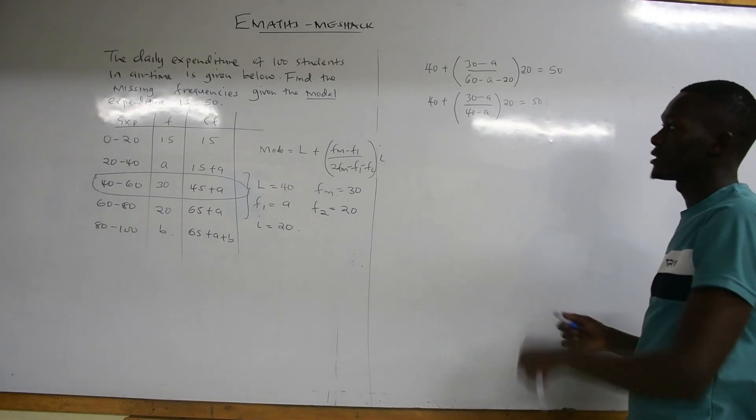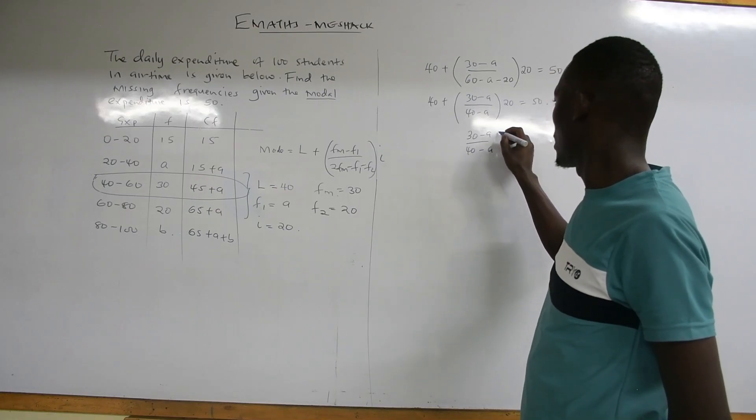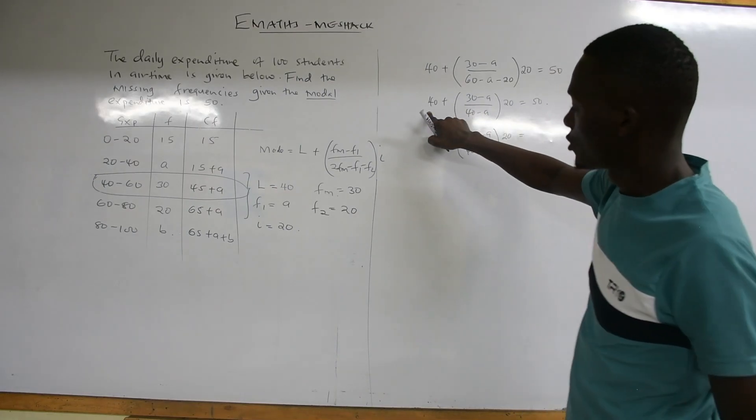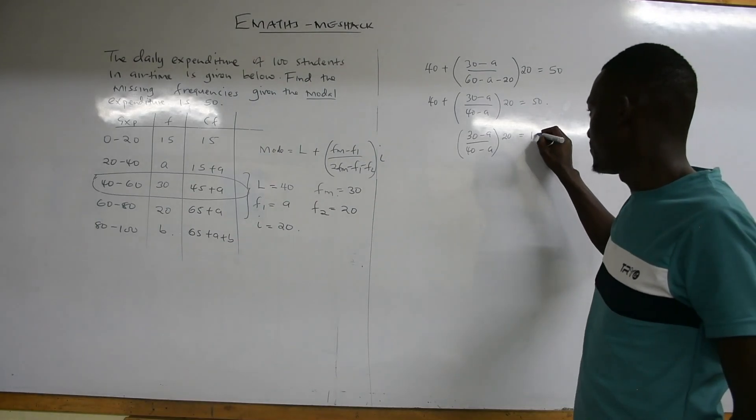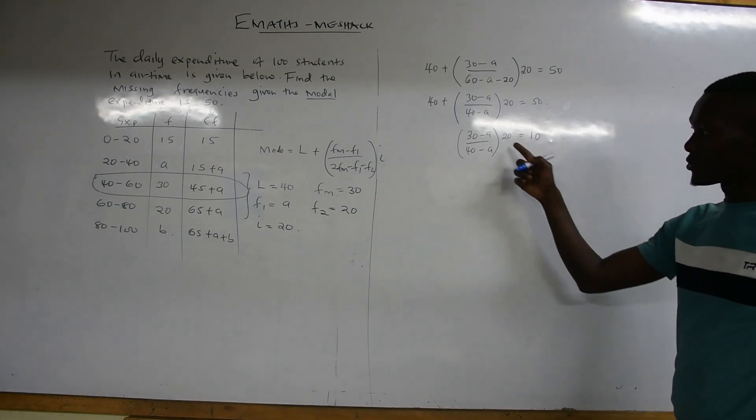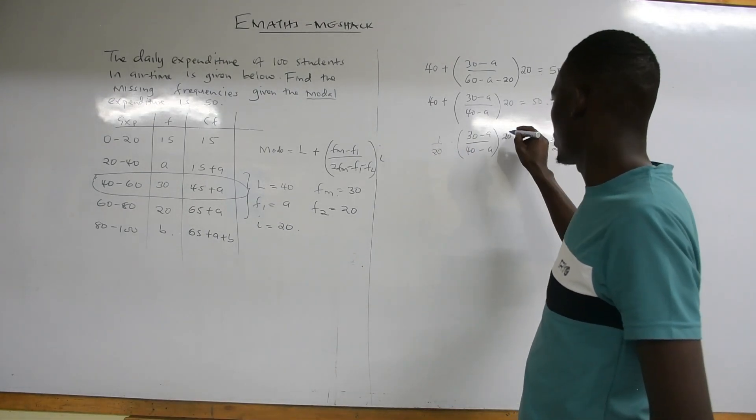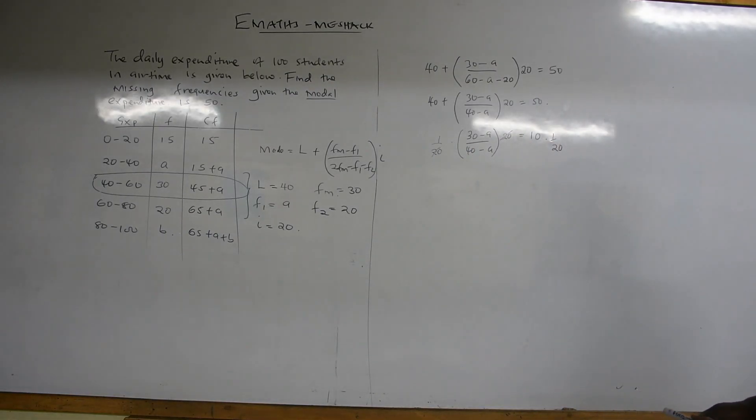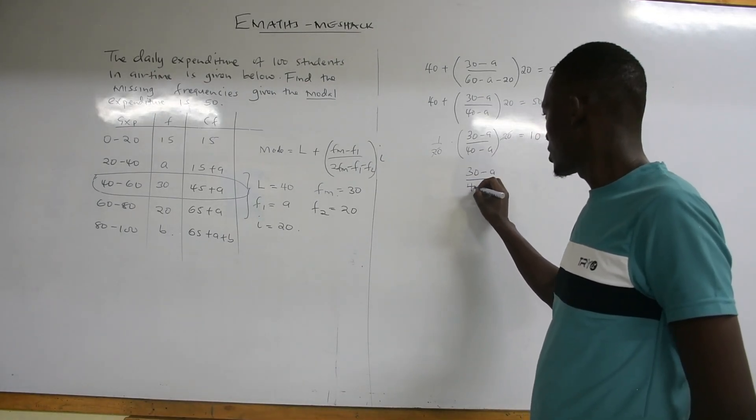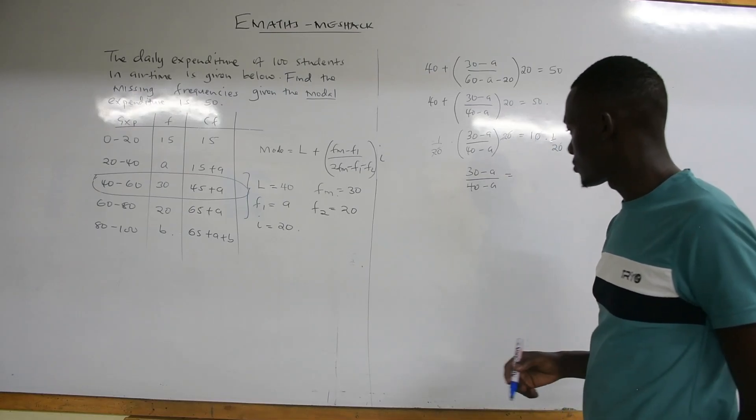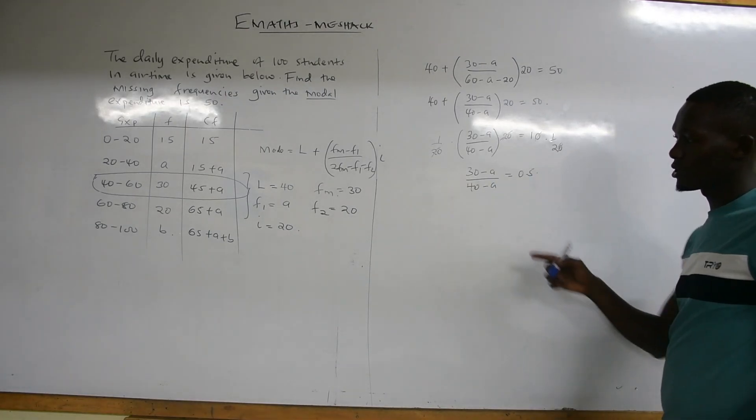When you take 40 to the right-hand side, it becomes 50 minus 40, which gives us 10. So 40 minus A into bracket 20 equals to 10. Then we multiply by 1 over 20 on both sides to remove the 20. We shall have 30 minus A over 40 minus A equals 0.5.